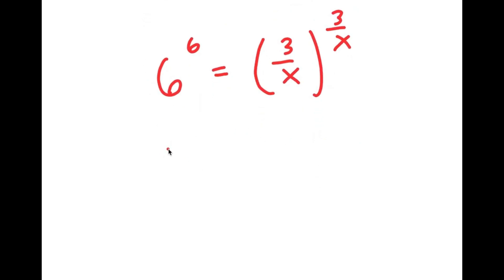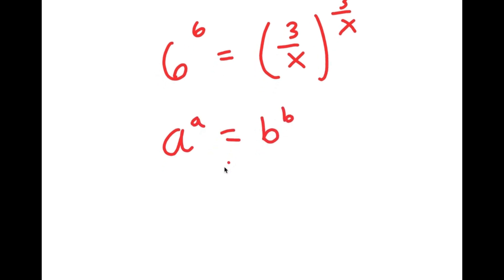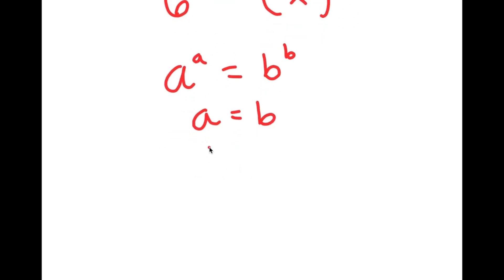If I have something in the form a to the power of a is equal to b to the power of b, this means that a is equal to b. So in this case, 6 is going to equal 3 over x.